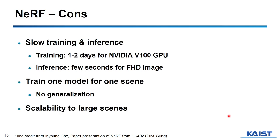However, NeRF does have some limitations. First, the speed of training and inference is very slow. For training, it takes one or two days with an NVIDIA V100 GPU. For inference, NeRF takes a few seconds for each image. Additionally, NeRF only trains for one specific scene, so if we want to generate an image from a different scene, we need to retrain the NeRF model for that scene. NeRF is also hard to handle for large scenes.